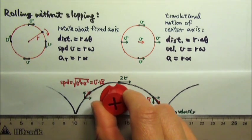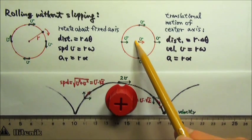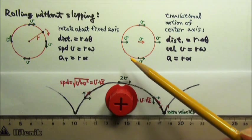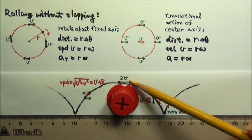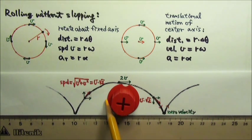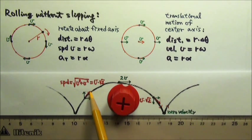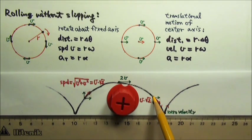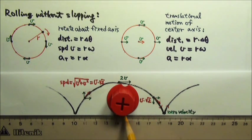So if the cap rolls without slipping and its center axis has a velocity of 5 meters per second to the right, the highest point would have a velocity of 10 meters per second to the right. This point would have a velocity of 5 times square root of 2 meters per second slanted that way, this other point would have a velocity of 5 times square root of 2 meters per second slanted this way, and the lowest point would have zero velocity.